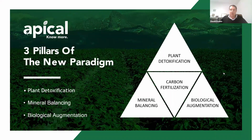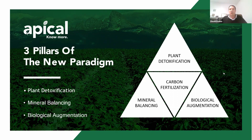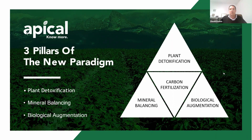The three pillars of the new paradigm are plant detoxification, mineral balancing, and biological augmentation. At the heart of each one of those is carbon fertilization — carbon fertilization can accomplish each one of these, but it is not the only way. Practically every recommendation that comes out of Apical through other agronomists or to our customers themselves has some form of carbon in the recommendation. It's a key framework that helps you access the new paradigm.